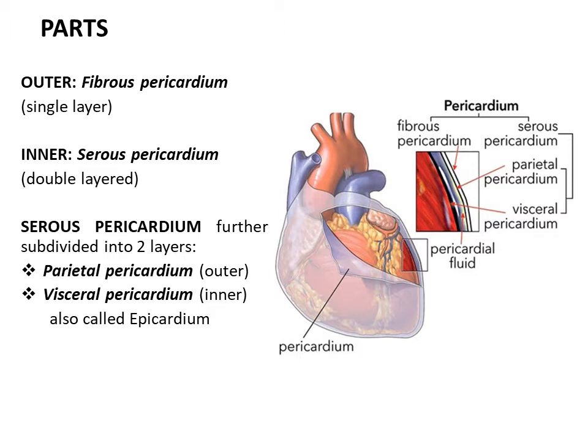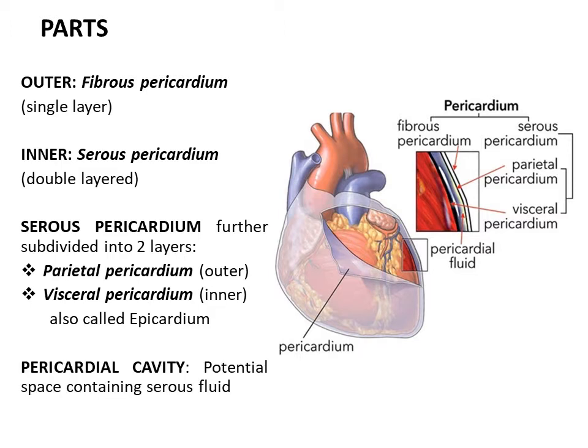Thus the pericardium consists of three layers. From outer to inner they are: the outer fibrous pericardium, the parietal layer of serous pericardium, and the innermost visceral layer of serous pericardium. A slit-like potential space present between the two layers of serous pericardium is the pericardial cavity, filled with a thin film of serous fluid called pericardial fluid, which acts as a lubricant facilitating sliding of the two layers during cardiac movements.